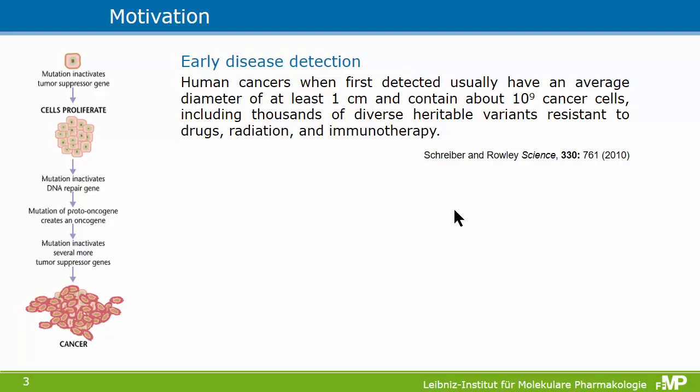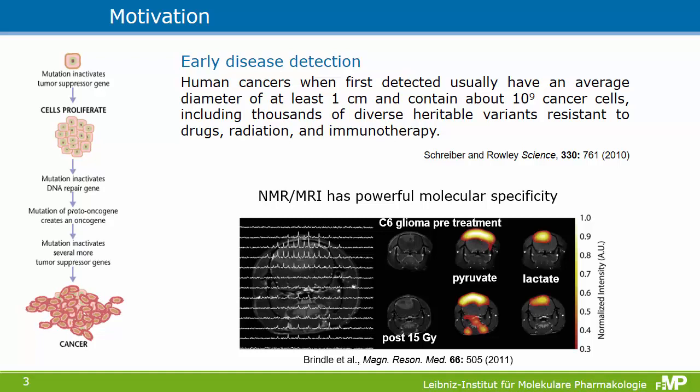So why are people interested in hyperpolarization? Conventional imaging requires a large amount of substance, which is why typically MR imaging is done with water molecules. On the other end, we know a lot about the onset and progression of disease on the cellular level, but the problem is to translate this knowledge into a diagnostic tool. A cancer when it's detected today has already on average the size of about a centimeter and contains about a billion cells that are quite different in their behavior and response to therapy.